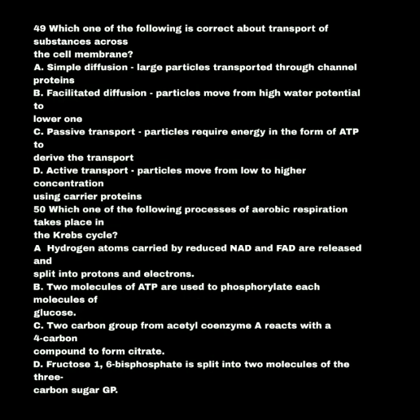Which one of the following is correct about transport of substances across the cell membrane? A. Simple diffusion — large particles transported through channel proteins. B. Facilitated diffusion — particles move from higher water pressure to lower. C. Active transport — particles require energy in the form of ATP to drive the transport. D. Active transport — particles move from low to higher concentration using carrier proteins. The correct answer is C: active transport requires energy in the form of ATP.